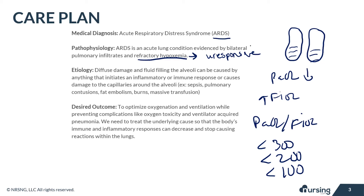Diffuse damage and fluid filling the alveoli can be caused by anything that initiates an inflammatory or immune response that damages the capillaries around the alveoli. Examples include sepsis, pulmonary contusions, burns, fat embolisms, and massive transfusions of fluid or blood.